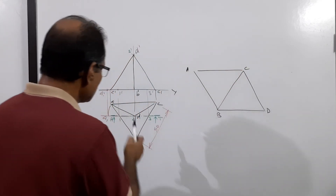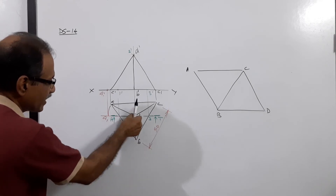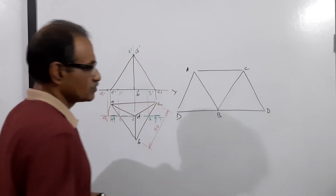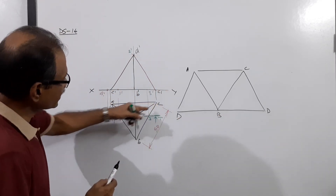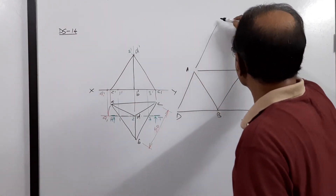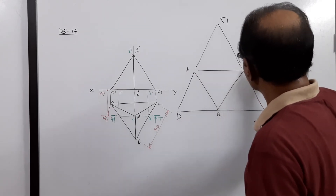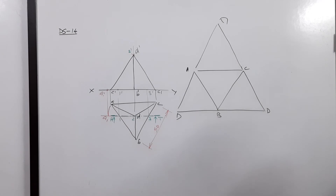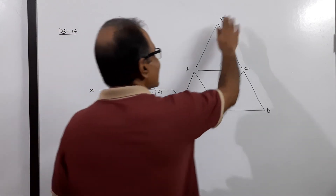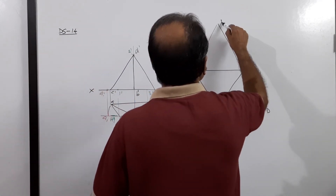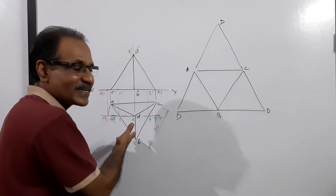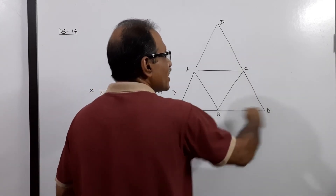Similarly, cut AD and DC, and unfold face DBC to get another triangle adjacent to BC, placing D there. The development of the tetrahedron is an equilateral triangle of side equal to 2A. If the side 'a' is 50, then 2A equals 100. The development is an equilateral triangle of side 100. It is a very interesting shape.